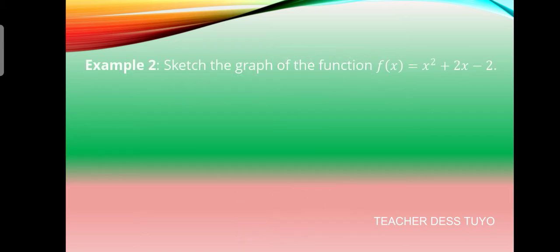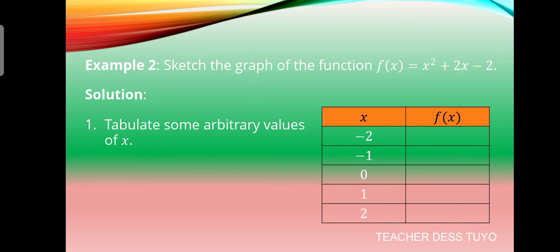For another example, we will sketch the graph of the function f(x) = x squared + 2x minus 2. For the solution, we need to tabulate some arbitrary values of x. We choose the values negative 2, negative 1, 0, 1, and 2. We can also choose another set of numbers to substitute for x.